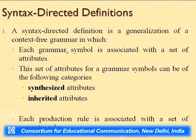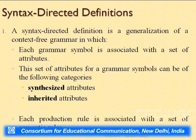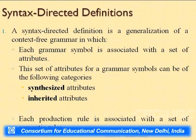Each grammar symbol is associated with a set of attributes, which can be of two types: synthesized attributes and inherited attributes. Each production rule is also associated with a set of semantic rules. One symbol may have various attributes, each referring to a different semantic situation, and for evaluation of each attribute value we may have a set of semantic rules. For instance, for the production E derives ID, if we want the val attribute's value, we write semantic rules for it — which can be one rule or many.